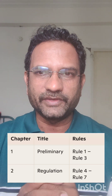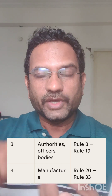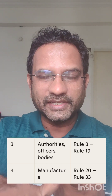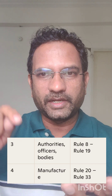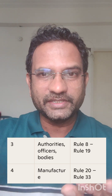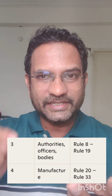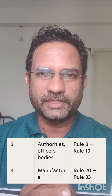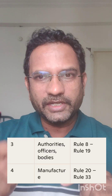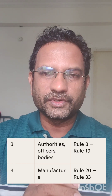Chapter 3 is about authorities, officers, and bodies. It covers the Central Licensing Authority, State Licensing Authority, Medical Devices Testing Officer, Medical Device Officer, Controlling Officer, and Notified Bodies. Rules 8 to 19 belong to this chapter. So if a question asks which chapter Rule 8 belongs to, knowing the chapter title helps you guess the answer.